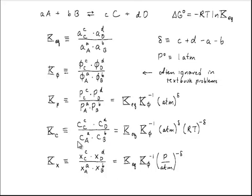You always want to be careful to make sure that you know what kind of equilibrium constant you're dealing with and its relation to the real equilibrium constant, which is the one that you can get from thermodynamic values. The way you do that is to go back to this expression and write all those activities in terms of, for example, a fugacity coefficient times a mole fraction times a pressure, if it's a gas phase reaction.